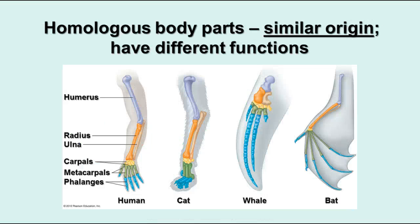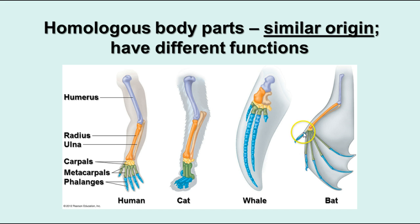Something else we can look at is homologies, and there are quite a few things to consider here. One thing you can see is homologous body parts — parts that have a similar origin but different functions. Looking at the bones of four different mammals, you can see they have the same bones, named the same and from the same origin. But the functions of the limbs are very different: the human hand, the cat's paw, the whale's fin, and the bat's wing. The arrangement of bones is similar, but the function and eventual structure are very, very different.